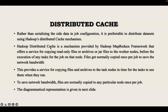Hadoop's distributed cache is a mechanism provided by Hadoop's MapReduce framework that offers a service for copying read-only files to the worker nodes before the execution of any tasks for the job on that node. It provides a service of copying files and archives to the task nodes for use when running. To save network bandwidth, these files are copied to any particular node only once per job.